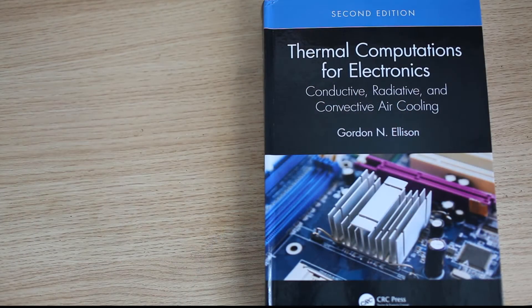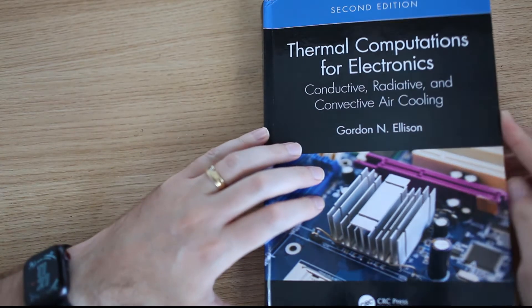Let's have a look at what's inside the book chapter by chapter. I'll tell you some of the things that I thought were good about the book and some of the things that were maybe less good. So here it is, Thermal Computations for Electronics by Gordon and Ellison.